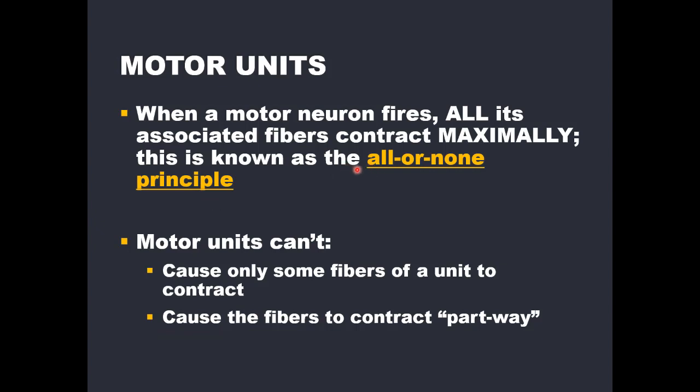For example, if a motor unit contained 10 fibers, the motor neuron cannot activate just 5 out of 10. When the neuron fires, all 10 will contract maximally according to the all-or-none principle. Also, the motor unit cannot cause fibers to contract part-way — it will always be 100% contraction, based on the all-or-none principle.